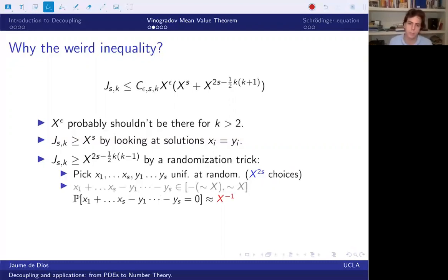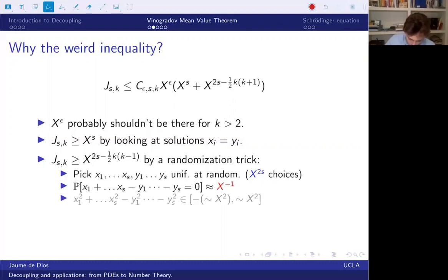You can do this argument with the other equations we have in the system as well. Now x1 squared plus x2 squared and so on minus the other ones is roughly between minus X squared and X squared. Therefore, the probability that if you choose numbers at random, you get this equation is at least 1 over X squared. That would be the uniform probability, but arithmetic doesn't actually go against you. It helps you out. So we get X to the minus 2 as well.